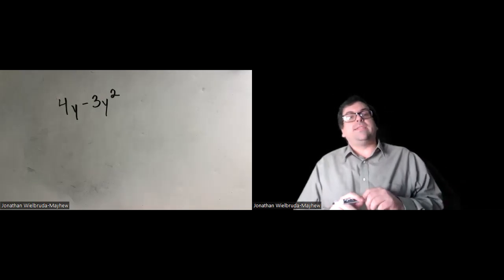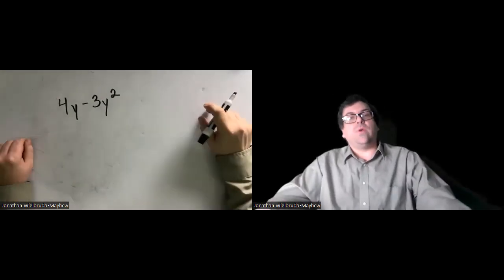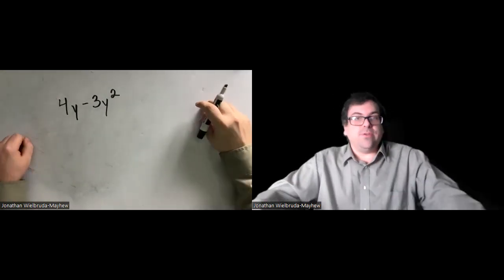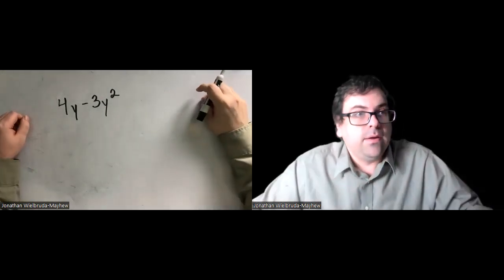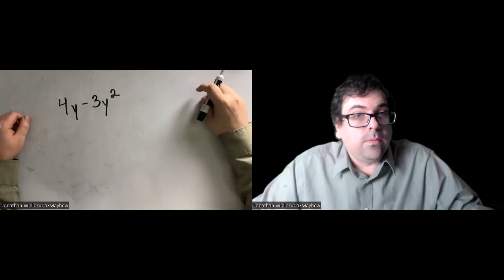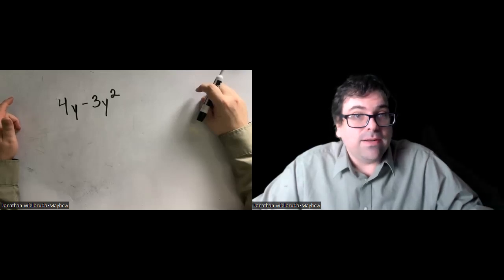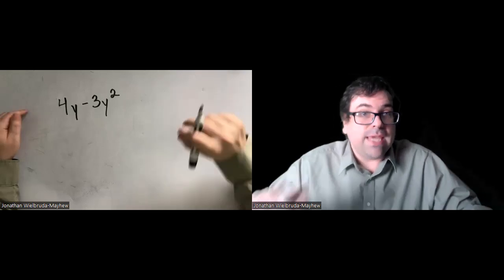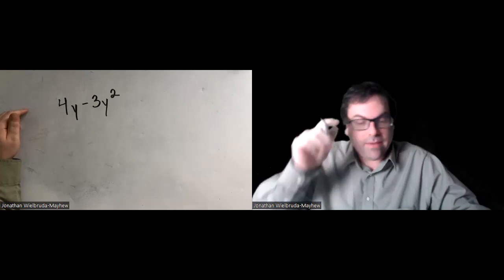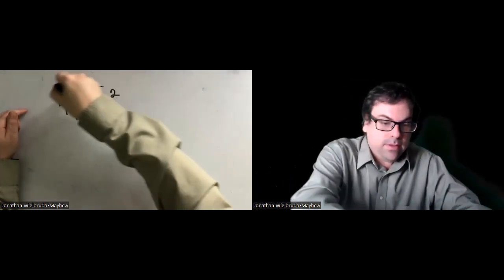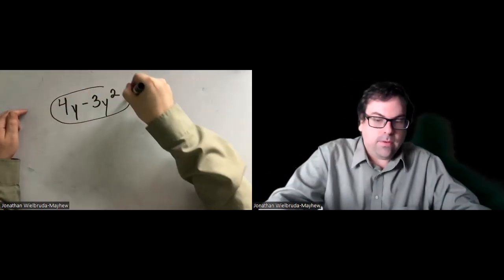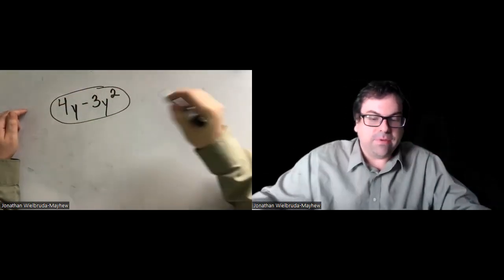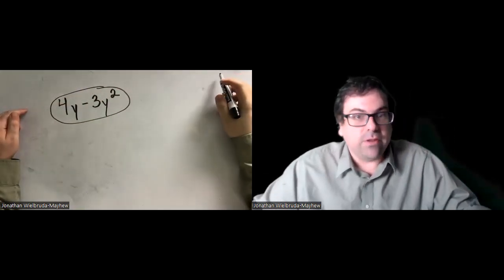4y minus 3y squared — what can we do here? Well, the answer is nothing. They aren't like terms. We cannot combine them. We cannot simplify this any further.